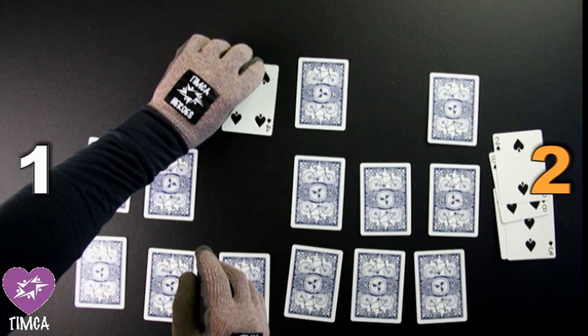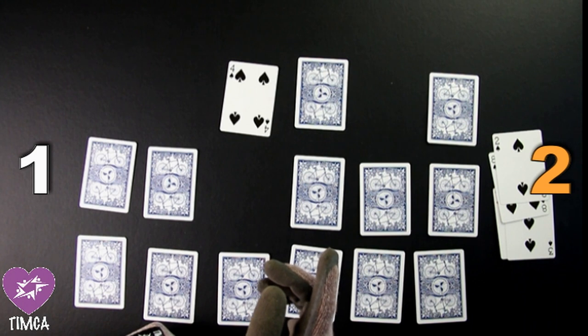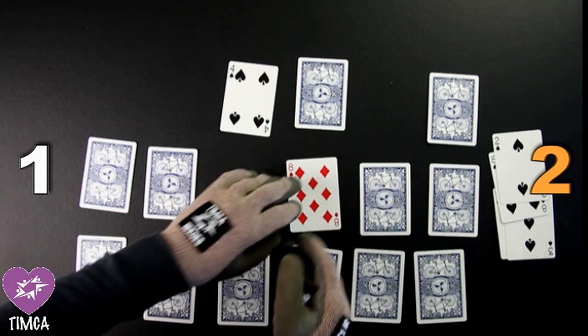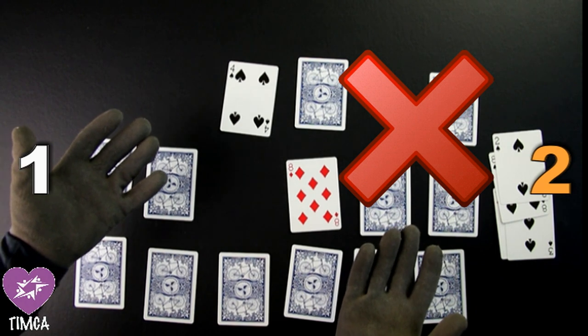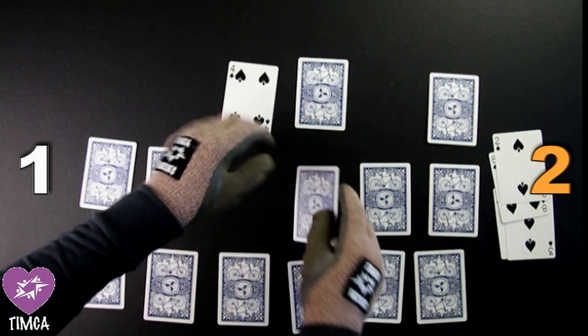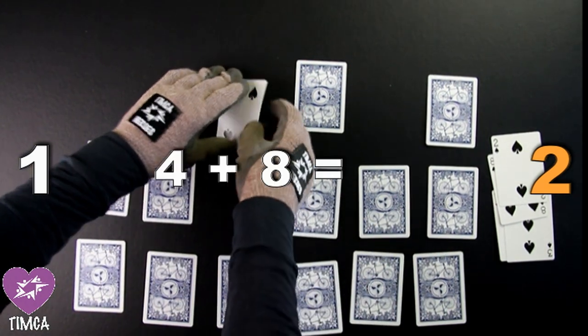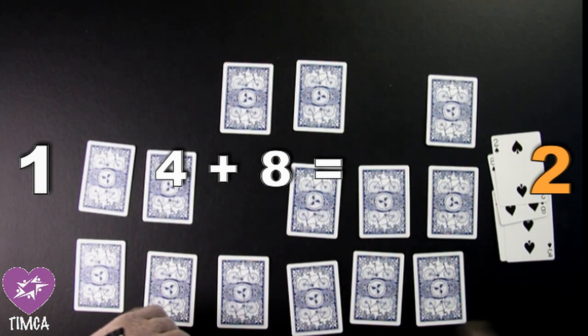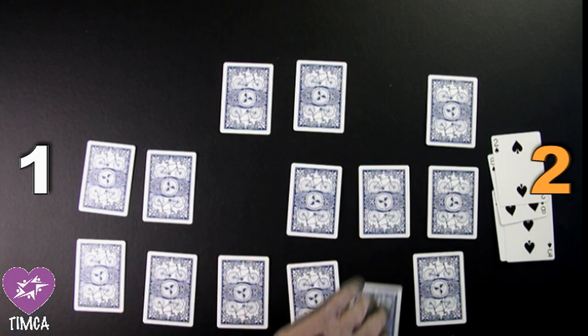It is now Learner 1's turn yet again. Learner 1 selects a 4. Can they find the matching 6? No, they found an 8. Now, we can calculate 4 plus 8. That equals 12. Now, it is Learner 2's turn yet again.